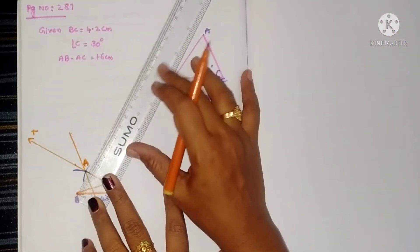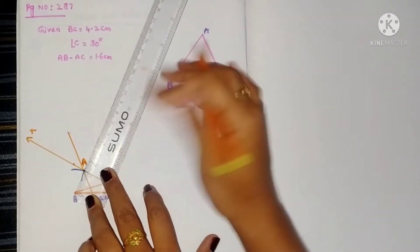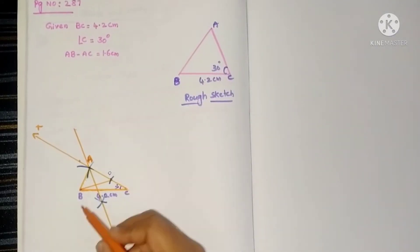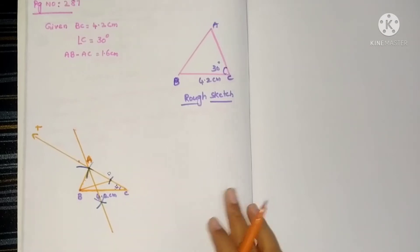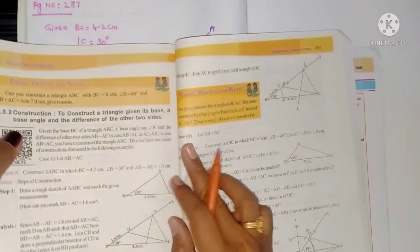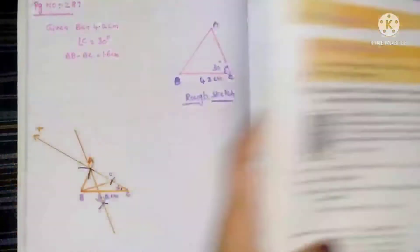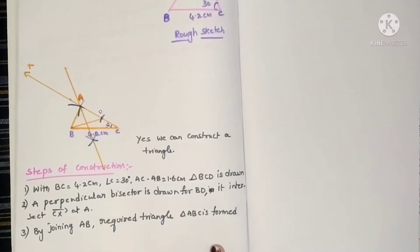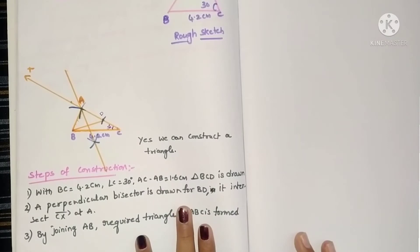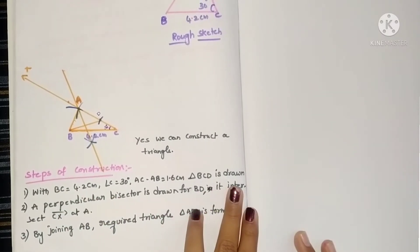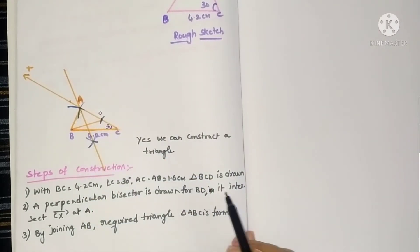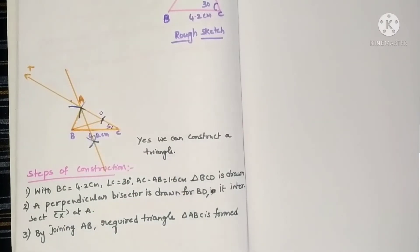A very small and neat diagram has come. So this is AB. This is the required triangle. Yes, we can construct a triangle like this after interchanging the angle. You can also write the steps of construction: First, triangle BCD is drawn with the given measurements. Next, a perpendicular bisector is drawn for BD; it intersects the ray CX at point A. By joining AB, the required triangle is formed.